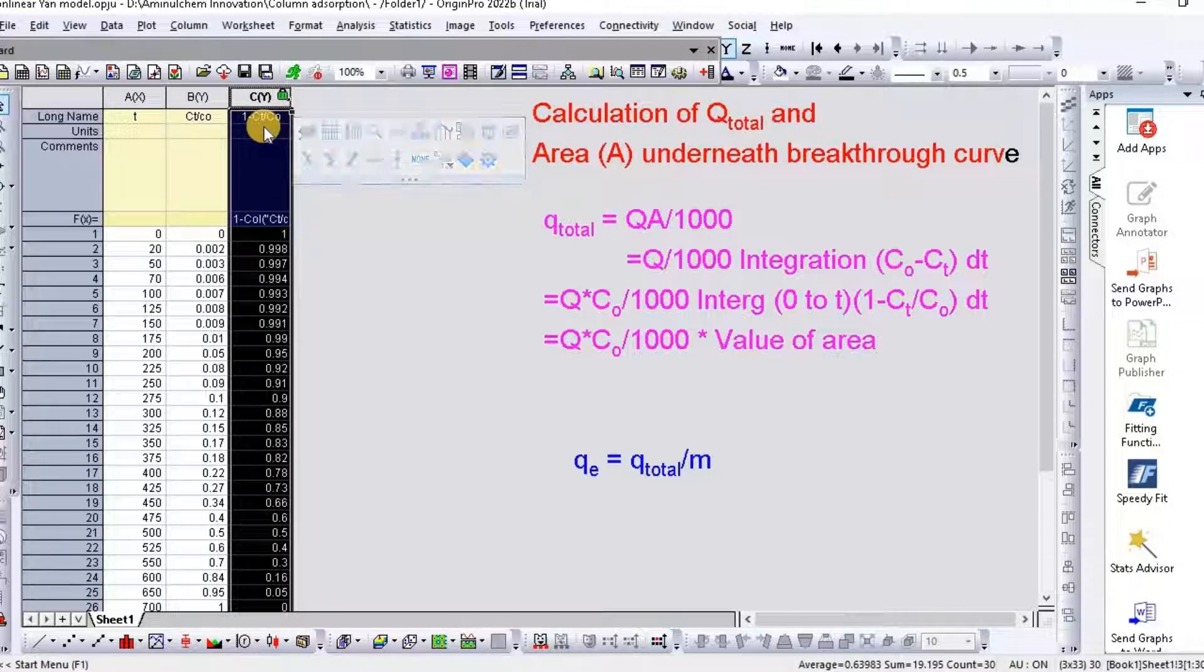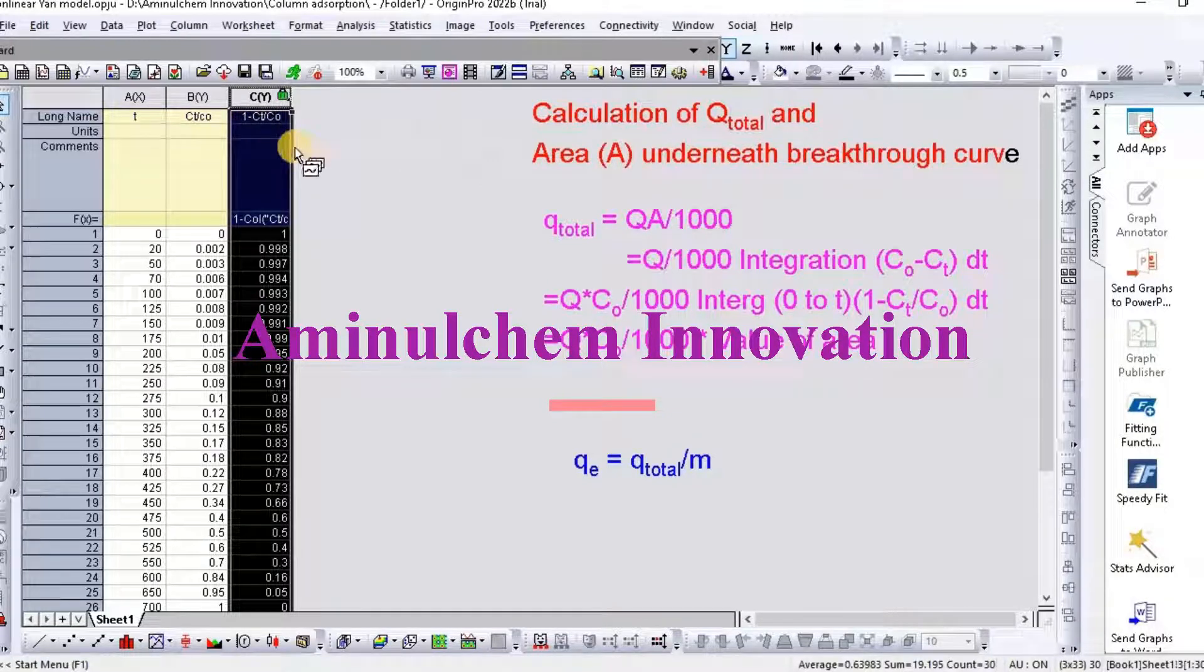Just select and set column value, then 1 minus Ct by C0.